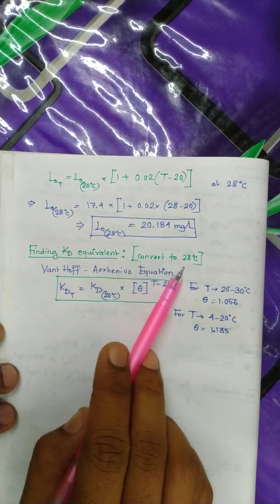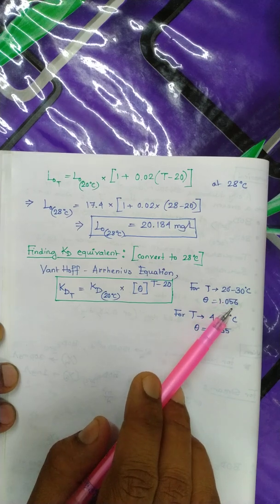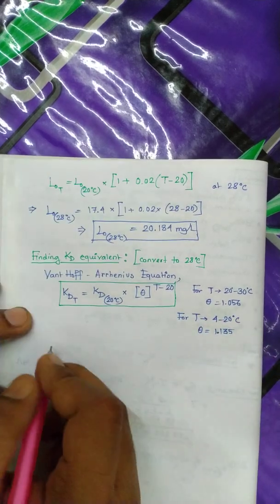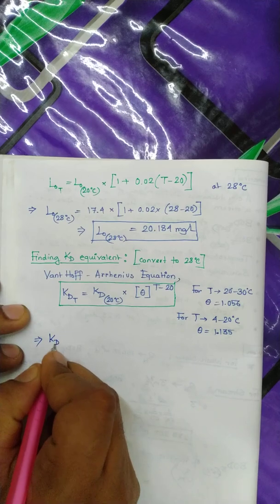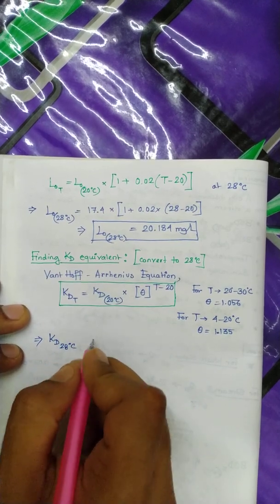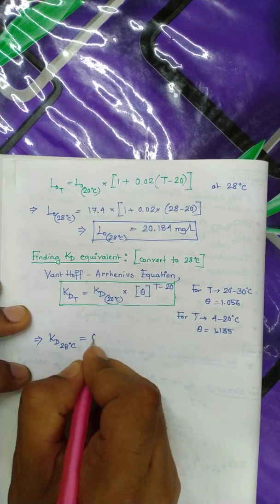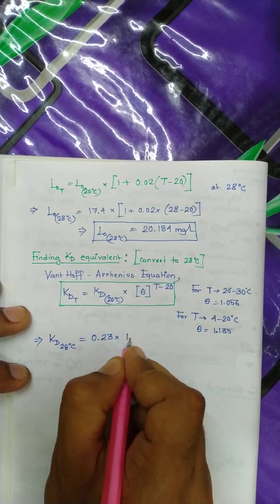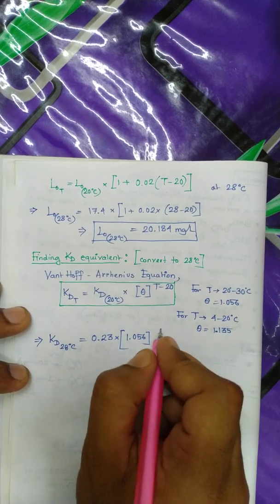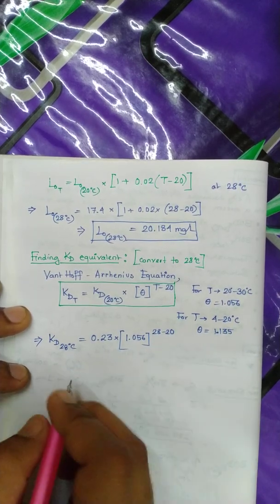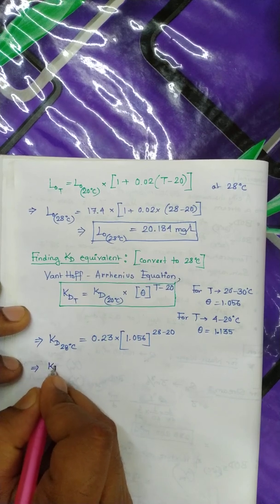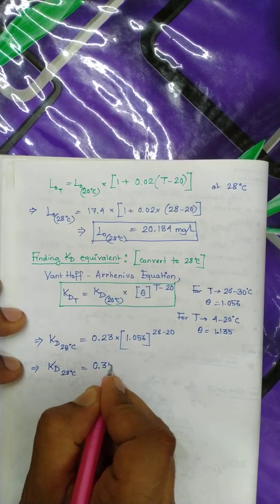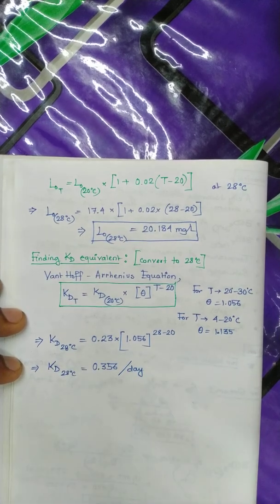Since T is 28 degrees centigrade, it falls in the 20–30 range, so theta is 1.056. Substituting into the equation: KD at 28°C equals 0.23 (the deoxygenation constant) multiplied by 1.056 to the power (28 minus 20). This gives KD at 28°C equal to 0.356 per day.